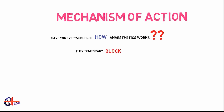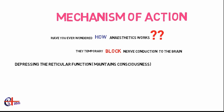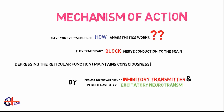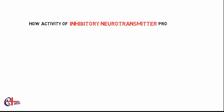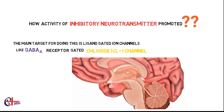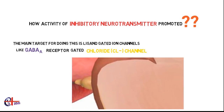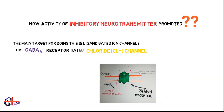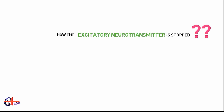Regarding the mechanism of anesthesia — anesthetics temporarily block nerve conduction to the brain. They suppress the reticular formation which maintains consciousness by promoting the activity of inhibitory neurotransmitters and suppressing excitatory ones. The main target for promoting inhibitory activity is ligand-gated ion channels like the GABA-A receptor-gated chloride channel. Many inhalational anesthetics potentiate the action of GABA to open the chloride channel, causing hyperpolarization of the neuron, which blocks nerve conduction.